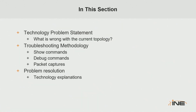The format of these sessions is that we have a technology problem statement that relates to BGP — meaning what is wrong with the current topology. Then we go through a troubleshooting method using show commands, debug commands, and packet captures in order to find the problem resolution. Then we talk about the technology within the scope of that particular problem, what are the different possible solutions, and then we implement those on the command line.